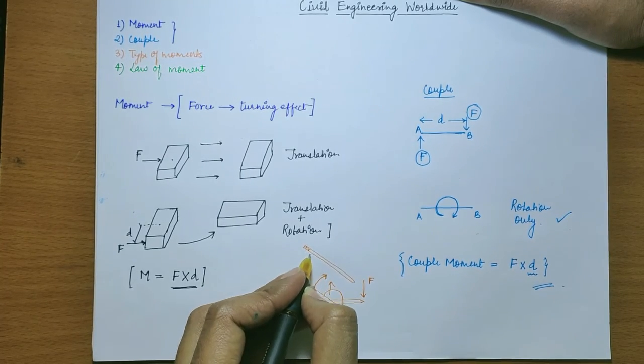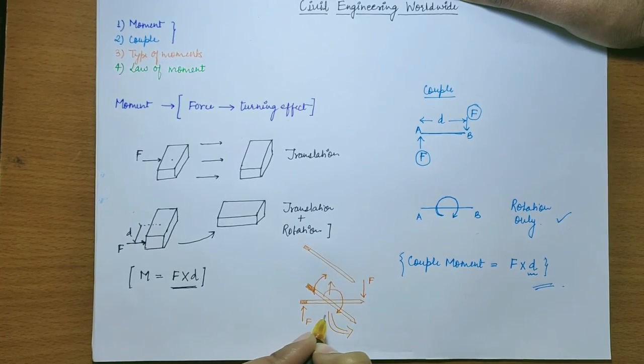I hope now you clearly get what is the difference between a moment and a couple. A moment produces translation and rotation whereas a couple only produces rotation.